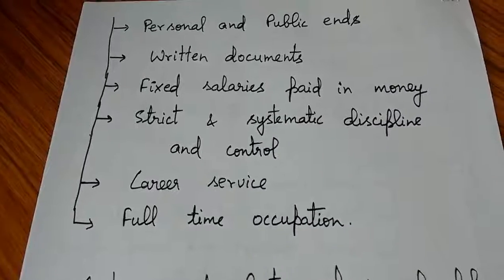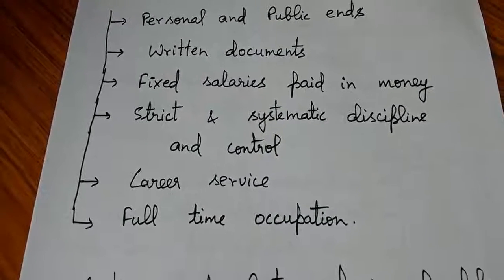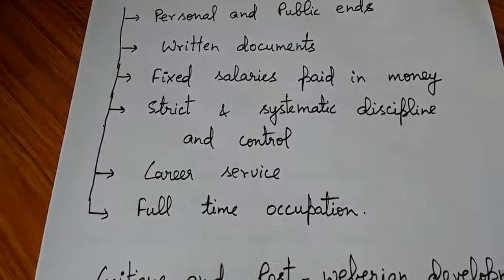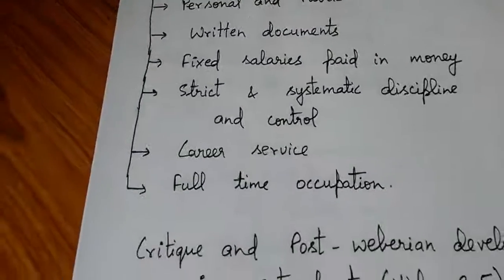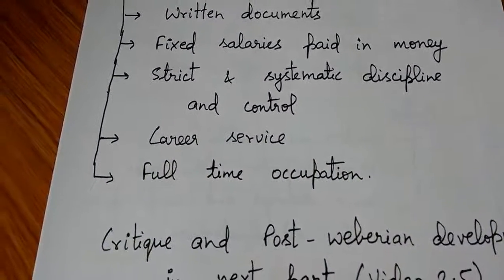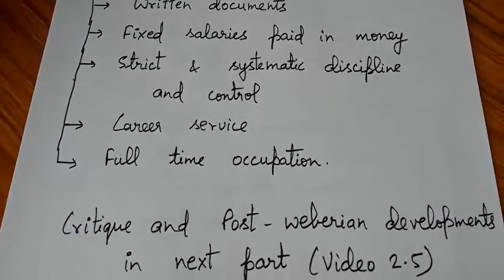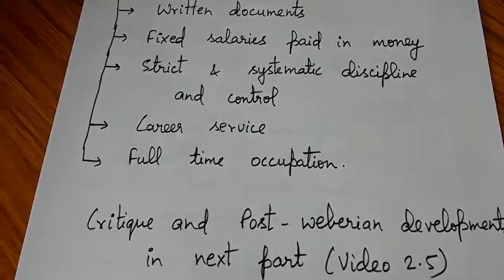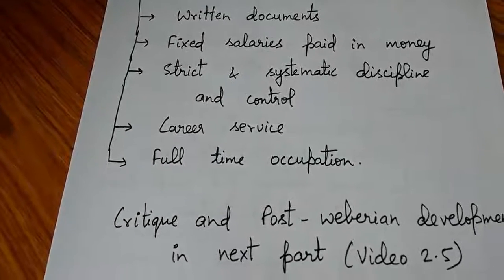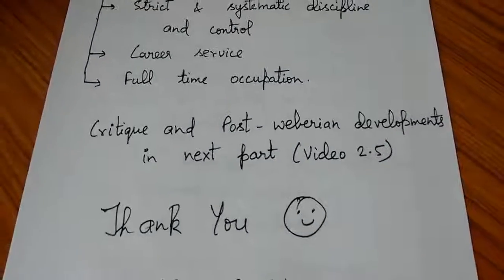Strict and systematic discipline and control is also essential — higher officials have total domination over lower officials, who must follow orders from above, consistent with Weber's view that administration is about domination. Finally, legal-rational bureaucracy is a career service: there are opportunities for promotion, pay scales increase over time, and it is full-time employment. Officials have financial security and job stability, allowing them to work independently to the best of their ability.